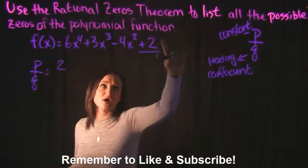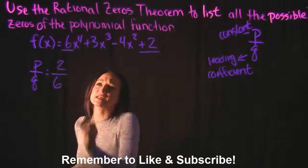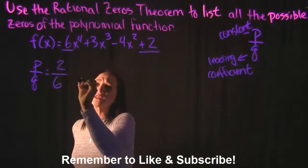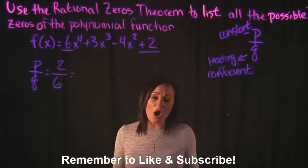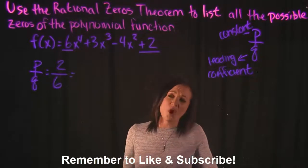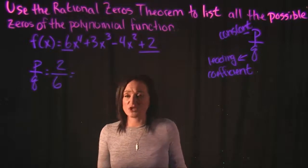since that is our constant for our function here. And Q is going to be 6 since that is our leading coefficient here. And what we're going to do is we need to list all the factors of these two numbers here. So we need to list all the factors of 2, and we need to list all the factors of 6.